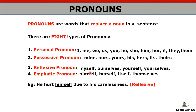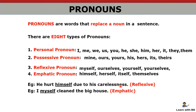Now how do you differentiate reflexive from emphatic? For emphatic pronoun, the self-word always comes immediately after the pronoun or noun — 'I myself', 'he himself', 'she herself' — immediately after the noun, to give emphasis. For example: 'I myself cleaned the house', 'She herself told me.' So whenever you use it to give emphasis, it comes immediately after the pronoun or noun — that is emphatic pronoun. If the self-word comes after the action verb and the action reflects back on the subject, it is reflexive.